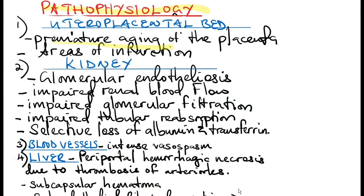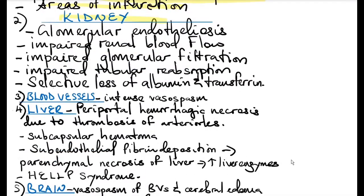Pathophysiology: there is premature aging of the placenta, and you can see areas of infarction on the maternal side of the placenta because of impaired blood perfusion. There is a characteristic lesion called glomerular endotheliosis, where endothelial cells swell up and fibrin-like deposits occur in the basement membrane. There is also impaired renal blood flow, impaired glomerular filtration, impaired tubular reabsorption, and selective loss of albumin and transferrin.